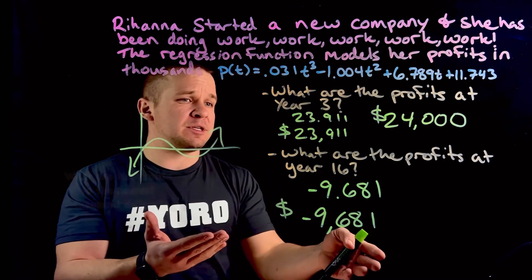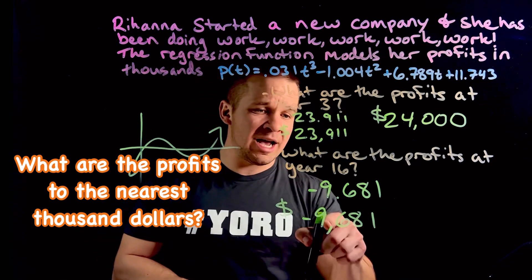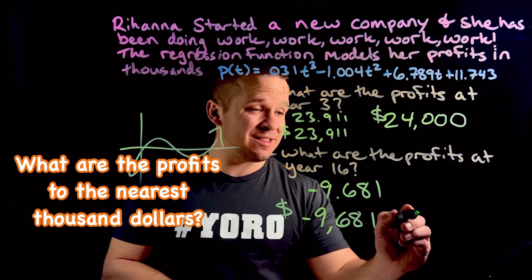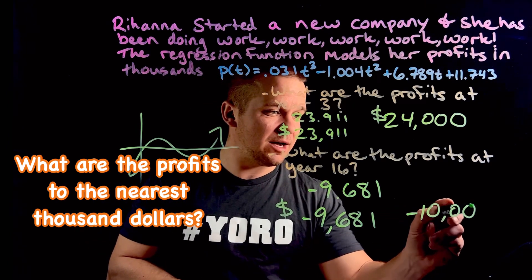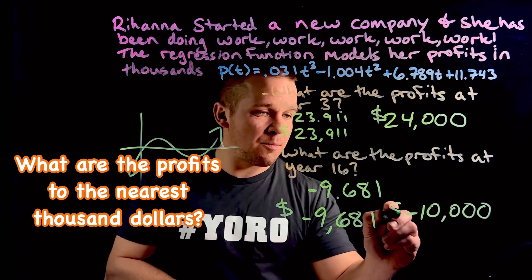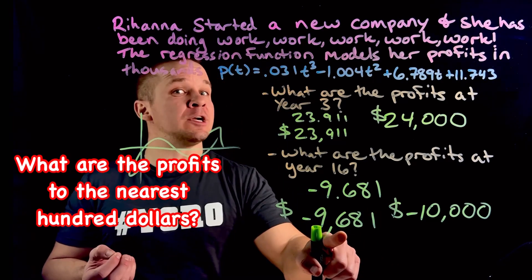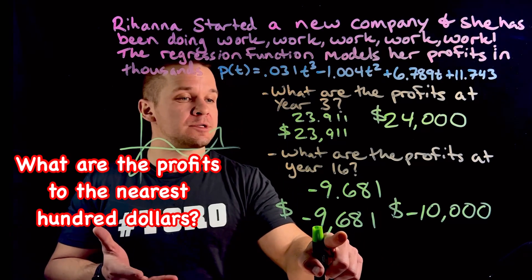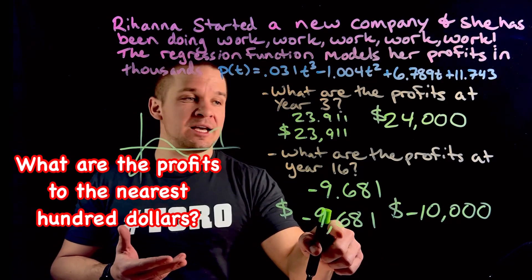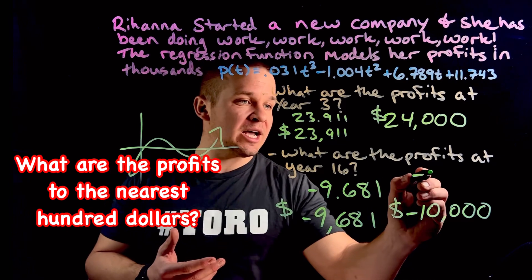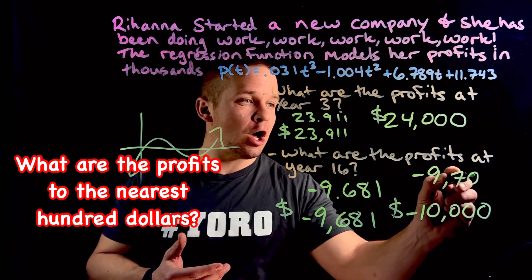So that's our negative profits. Or again, if we were asked maybe to the nearest thousand dollars, we're looking at negative $10,000. Or maybe I just said to the nearest hundred dollars — well, that eight would round up that six, so I'd be negative $9,700.